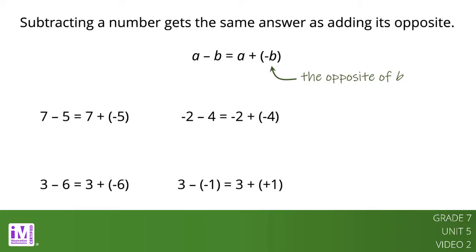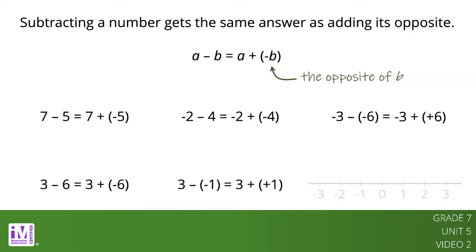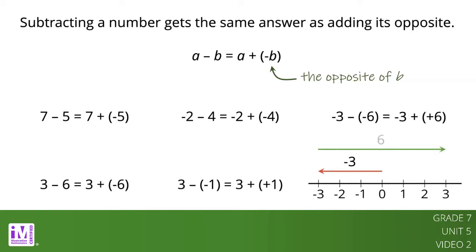How can you use this pattern to solve negative 3 minus negative 6? The opposite of negative 6 is positive 6. So we can rewrite the problem as negative 3 plus positive 6. The answer is positive 3.